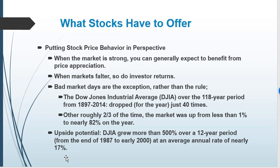Stock behavior is rather volatile — it's uncertain. When the market's strong you can really expect to benefit from price appreciation. However, the market doesn't always move forward; there are bad days. Over a 118-year period of the Dow, it's only been negative 40 times. Roughly two-thirds of the time it was up at least 1%, and at its height actually 82%. So the Dow does show that the stock market has some growth potential.